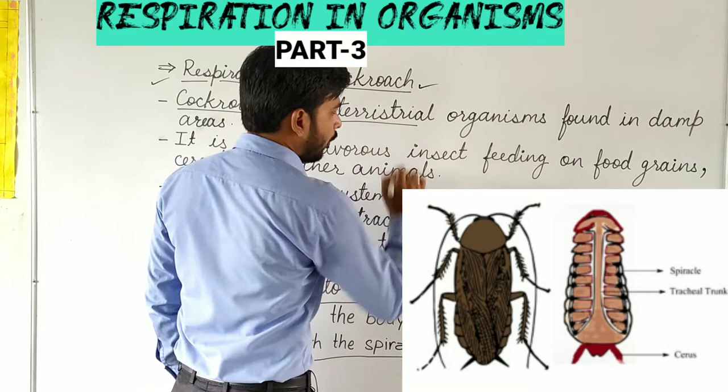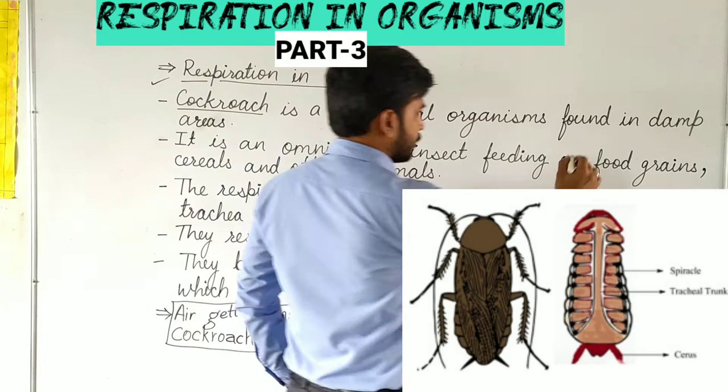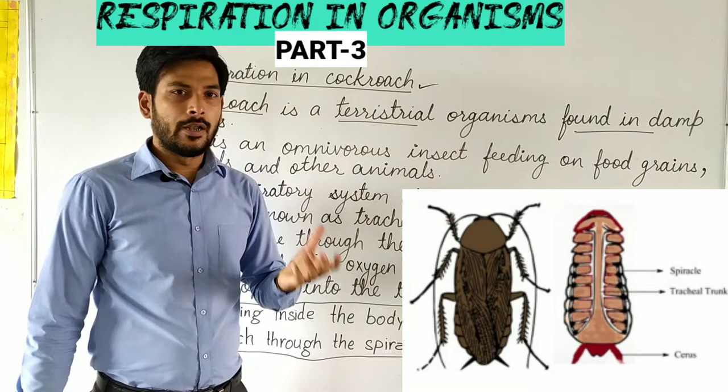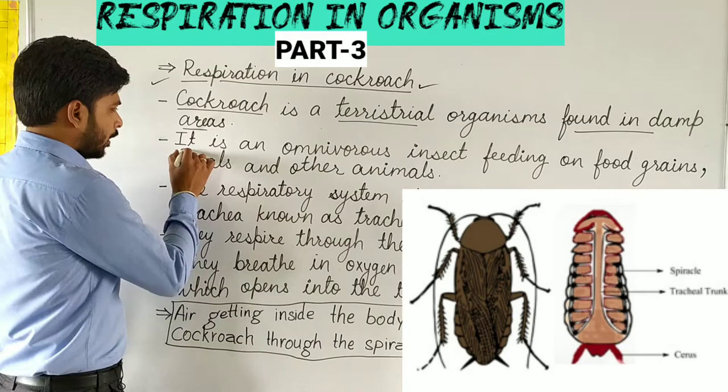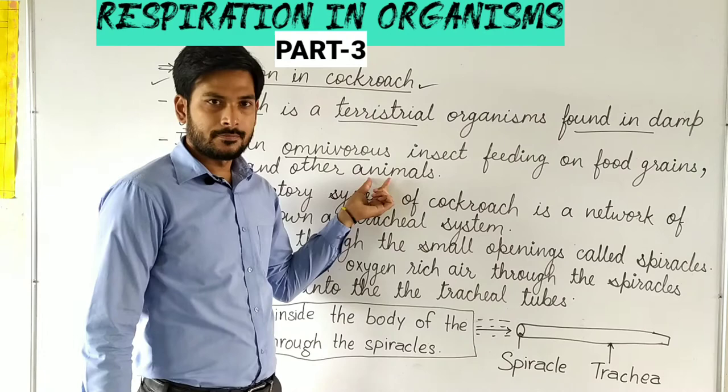Cockroach is a terrestrial organism — an organism that lives on land, found in damp areas. It is an omnivorous insect, feeding on food, grains, cereals and other animals.